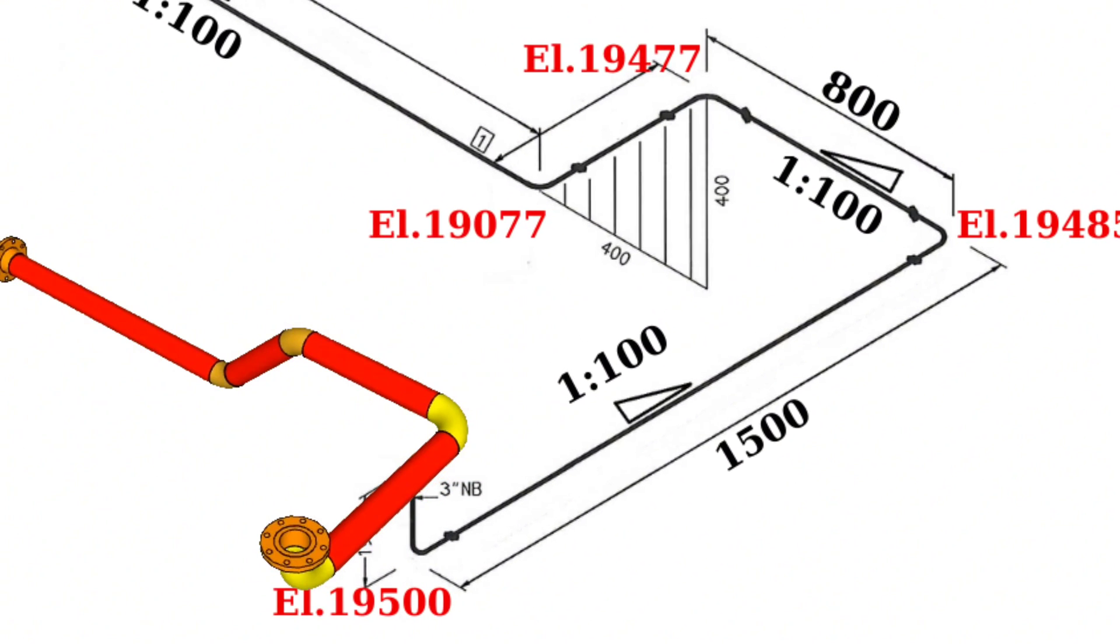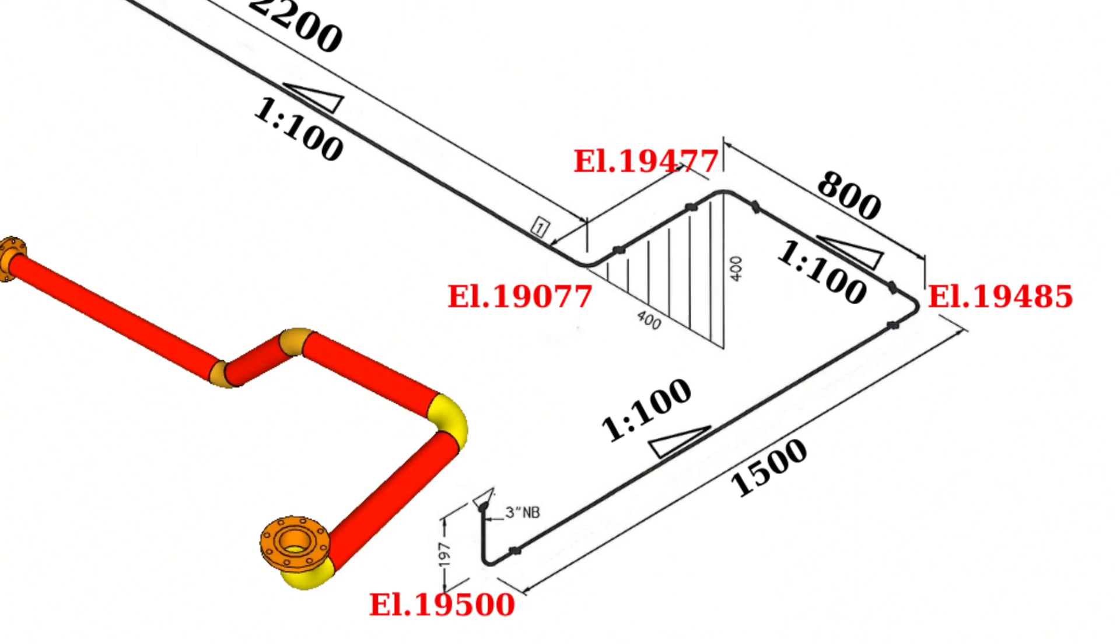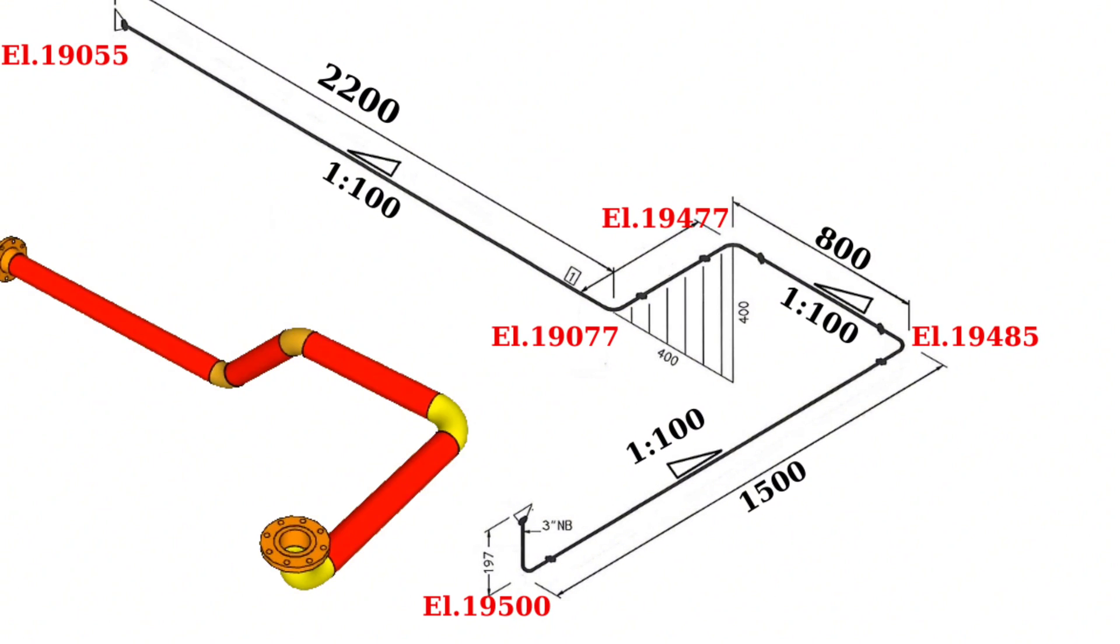It is also possible to calculate the slopes in the pipelines with the elevations shown at the turns in the pipeline. In this piping isometric drawing, the initial height of the pipeline elevation is 19,500 millimeters, and the height of the pipeline at the second turn with a slope of 1:100 elevation is 19,485 millimeters.